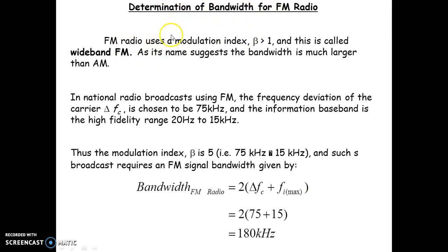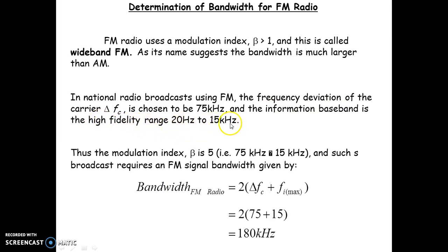For bandwidth determination: if beta is greater than 1, it is called wide band FM; if less than 1, it is narrow band FM. In Problem 3, for national radio broadcast using FM, the frequency deviation of the carrier FC is chosen to be 75 kilohertz, which is standard for most FM cases. The information baseband message signal has a high-fidelity range from 20 hertz to 15 kilohertz.